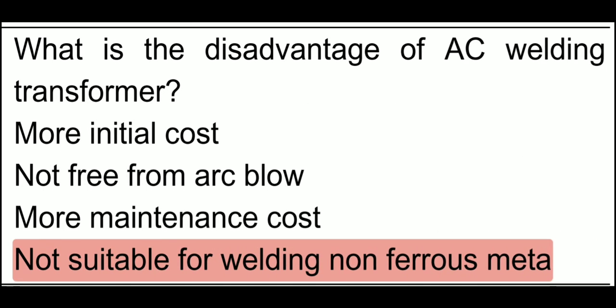What is the disadvantage of an AC welding transformer? The AC welding transformer used in welding has the disadvantage of being not suitable for welding non-ferrous metal. We cannot weld non-ferrous metals using an AC welding transformer machine. It is used for ferrous metals only. So the disadvantage is: not suitable for welding non-ferrous metal.